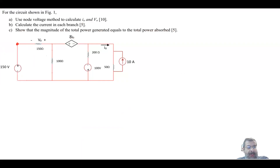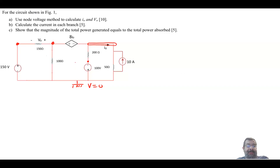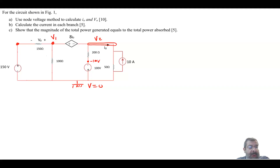To approach a nodal question, first identify the nodes. We have one node, another node, another node, and this is the common reference node where V equals zero. There is also another node. I'll call this V1 and this V2 — V2 is the voltage from this node to the reference ground. The voltage at one point is minus 100 volts, which will be needed to calculate current later, and the voltage here is 150 volts.